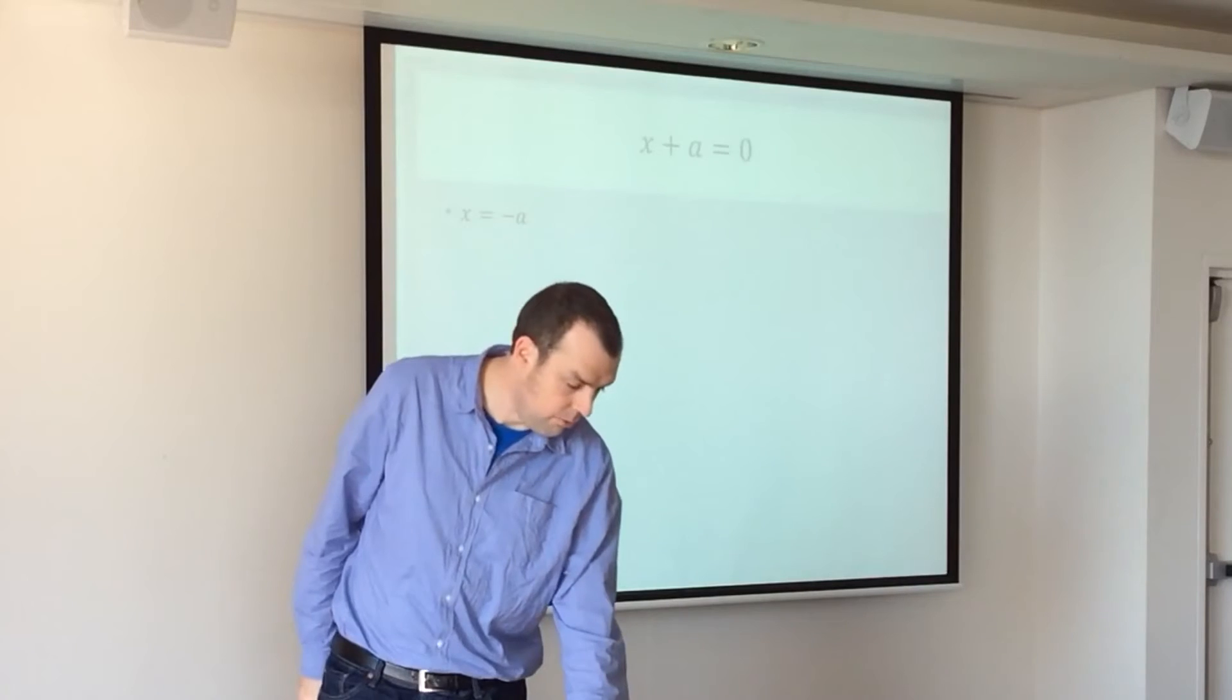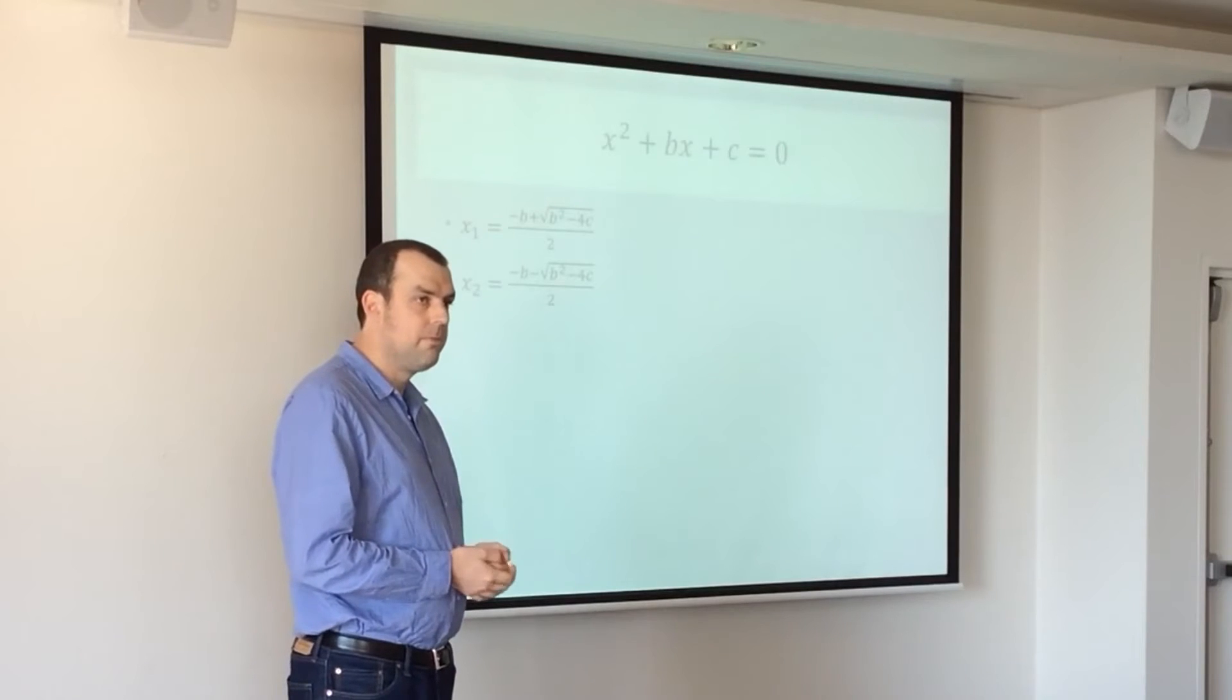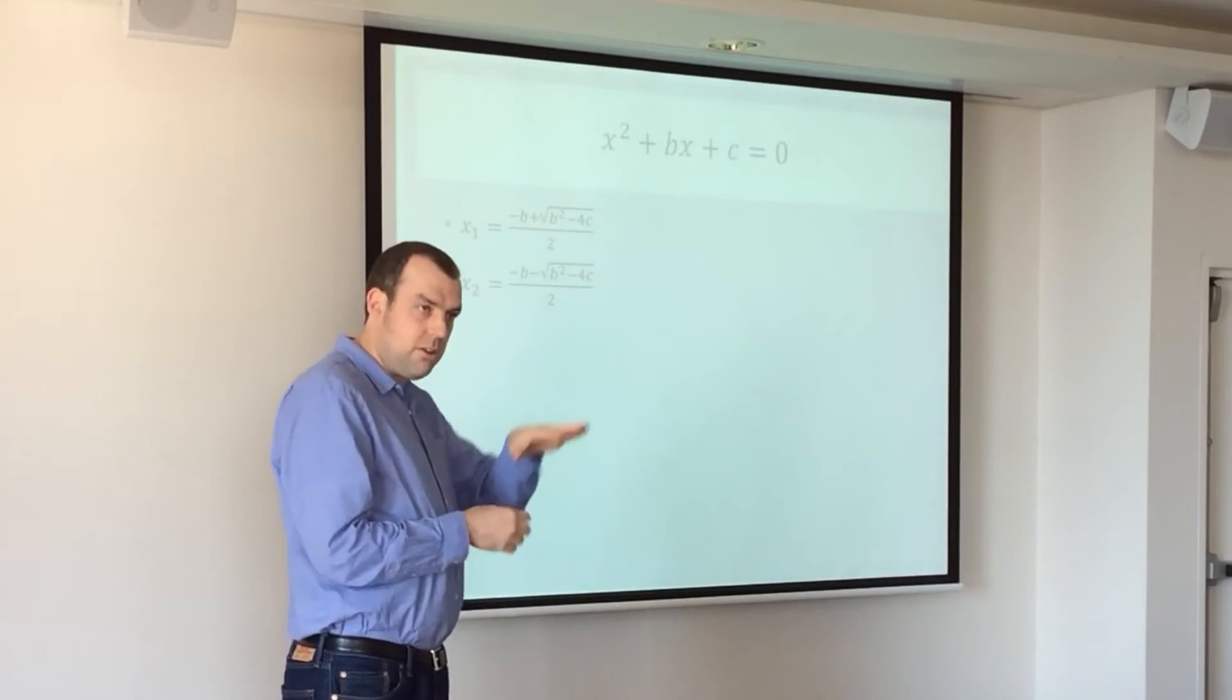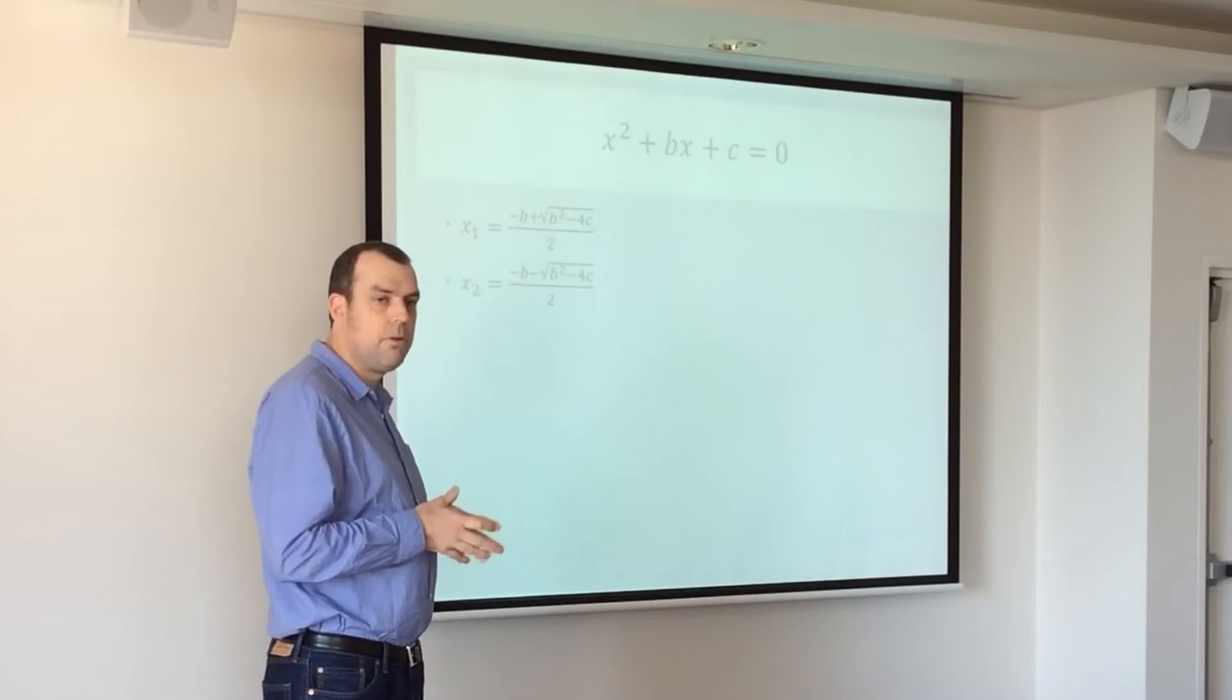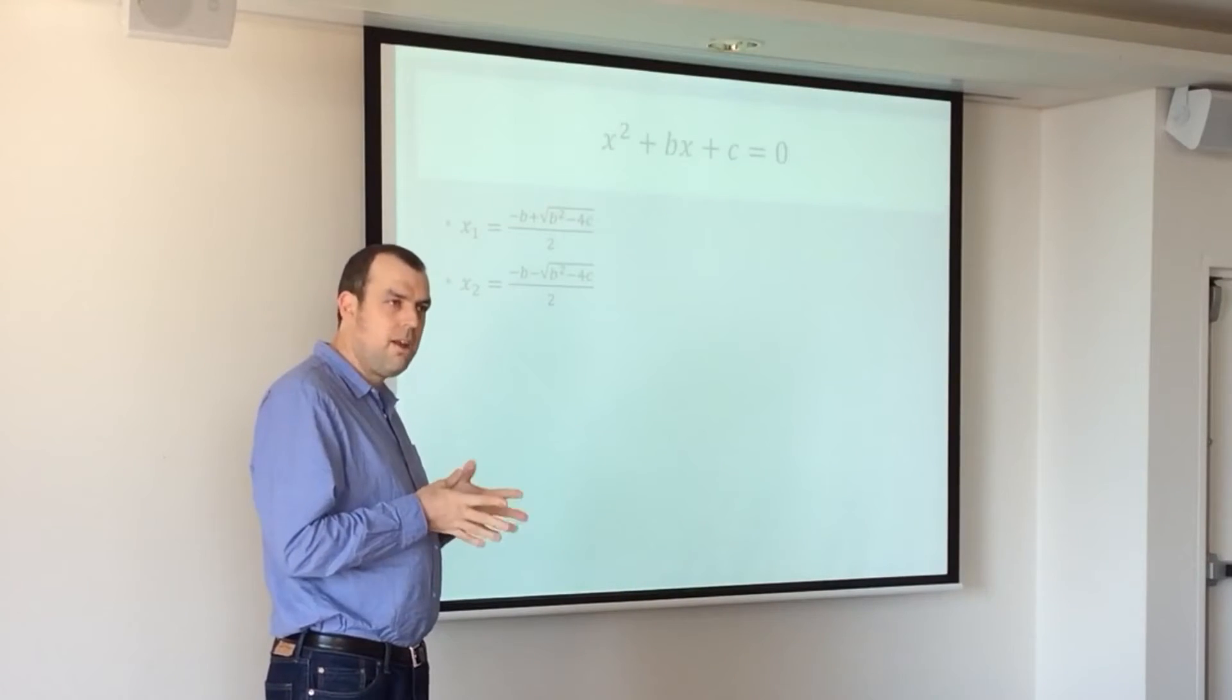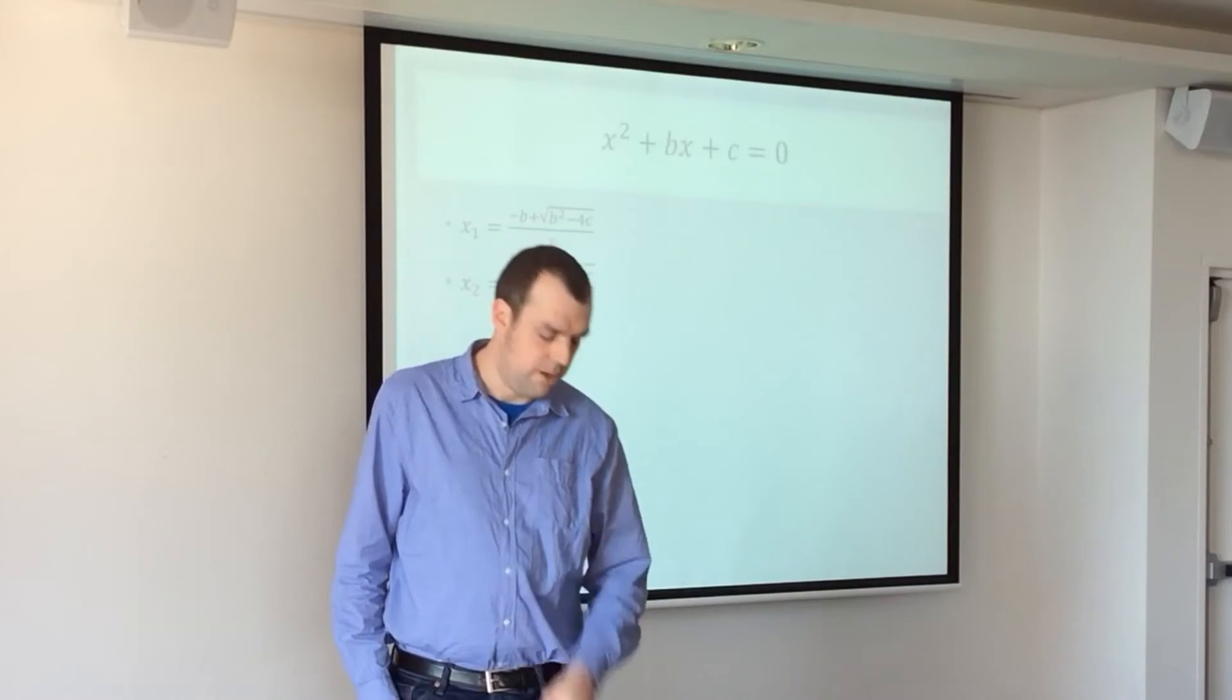So linear equations are easily solved. Quadratic equations have two solutions, and these have been known for a long time. The latter period Babylonians and Chinese both knew about completing the square around 200 to 300 BC. I think Euclid knew something about it. So quadratic equations have been known for a long time.